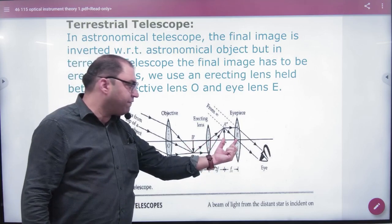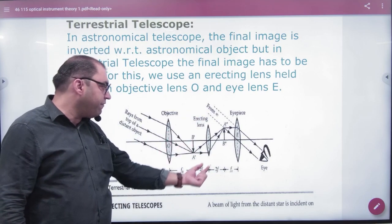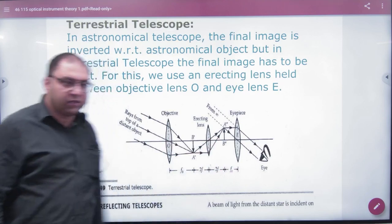And what is it? It is Fe. The image is at infinity. So what will be the total length? Fo plus 2F plus 2F plus Fe. This is the length of the telescope.